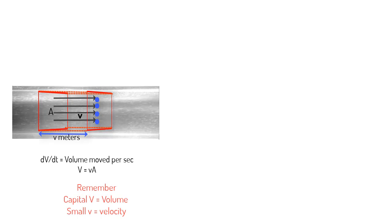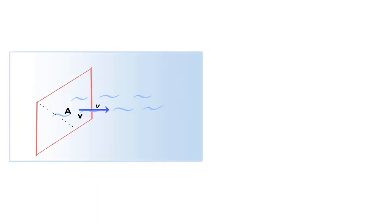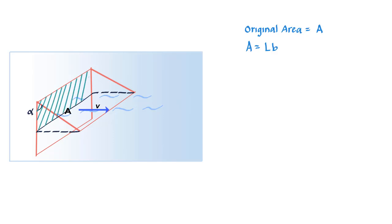But let's say if we tilt this rectangle by an angle alpha such that the face is no more perpendicular to the velocity vector v. What we find is that the relevant area through which water is now going through is not this anymore but is this.